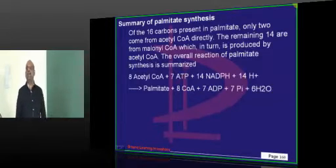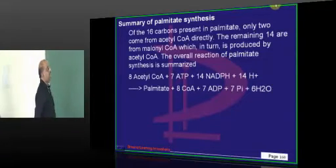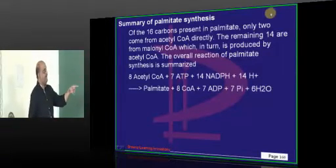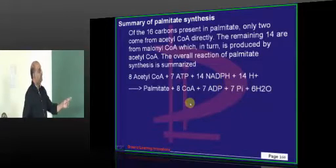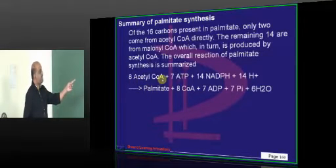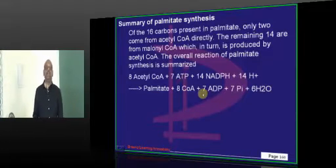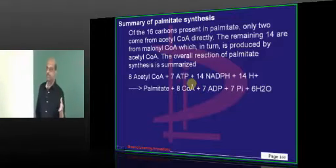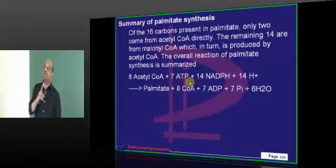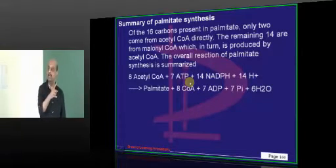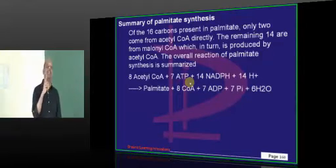Coming to palmitate synthesis — the typical formula to remember: 7 ATPs become 7 ADPs, 14 NADPH are broken down, and during that process 8 acetyl-CoA combine to form one palmitate molecule. This is a typical energy equation, similar to the energy equations for the citric acid cycle and glycolysis. A key question: if glucose becomes lactate, how many ATPs? If glucose passes through the entire citric acid cycle, how many ATPs per glucose? There is a difference between the two which you must be very clear on.